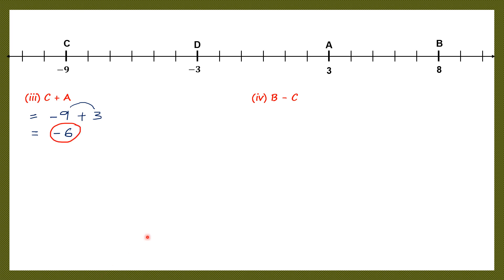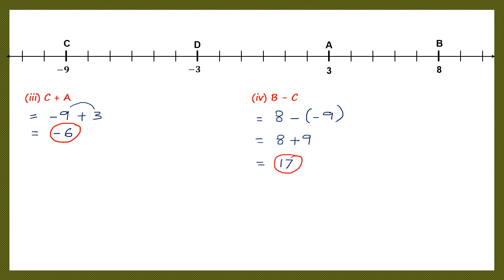Next, B minus C. B is 8 and C is minus 9. So we write 8 minus minus 9. Opening the brackets: minus before a bracket means change the sign of the other integer, so it becomes plus. 8 plus 9 is 17, and this is our final answer.